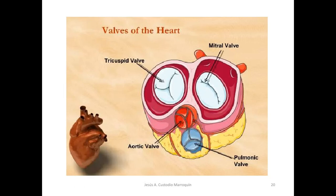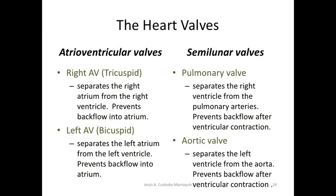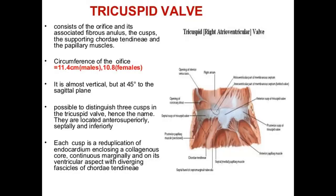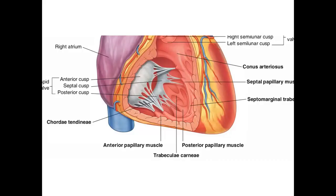Reviewing in diagrams: the right AV tricuspid and left AV bicuspid, and the pulmonary and aortic semilunar valves. The tricuspid has three leaves, 11.4 cm in males and 10.8 cm in females, with cusps located anteriorly, septally, and inferiorly, along with three papillary muscles — anterior, posterior, and septal. The septomarginal trabecula, or moderator band, is also shown. The pulmonary valve is shown in the conus arteriosus or infundibulum of the right ventricle, which is smooth and separated from the right ventricle by the supraventricular crest.